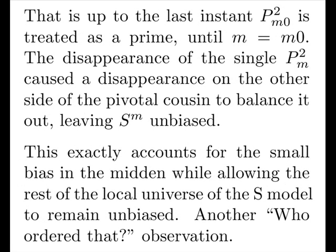That is, up to the last instant, some prime squared is treated as a prime until that iteration. The disappearance of a single prime at that moment causes a single disappearance on the other side of the pivotal cousin to balance everything out, leaving the S model unbiased. This exactly accounts for the small bias in the midden of the Shevichev bias, while allowing the rest of the local universe of the S model to remain unbiased.